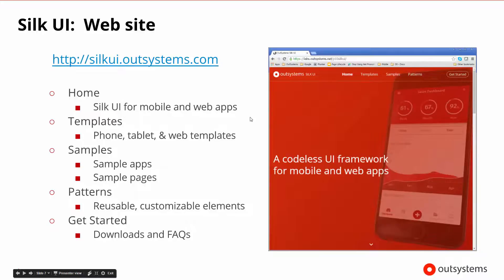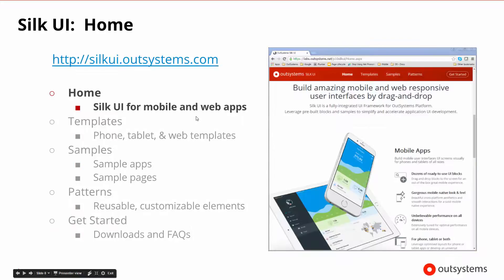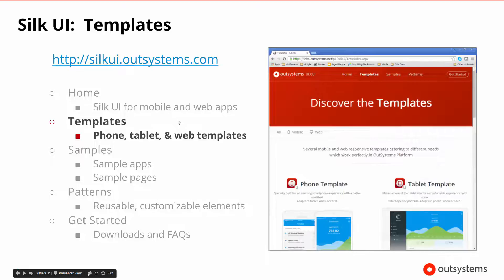The home section gives an overview of what's available and discusses how different parts of mobile apps and web apps have been set up for Silk UI to help us create those types of apps quickly. There's also a template area that shows the different types of templates available.